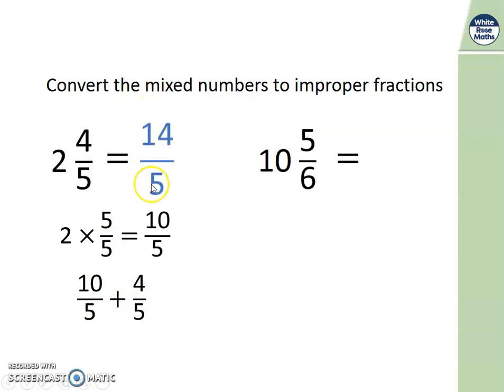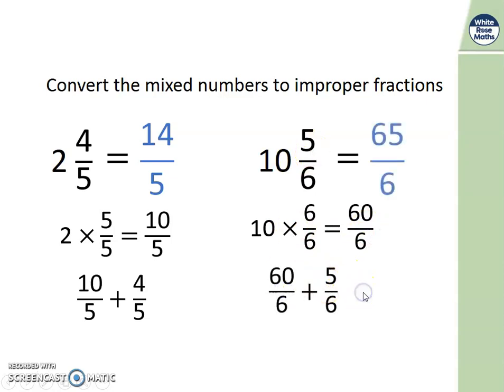On this one, we've got 10 times 6 sixths. Because that's 10 whole ones. 10 times 6 is 60. 60 sixths. And I'm going to add 5 more on. So I have 60, add 5 more on, is 65 sixths.